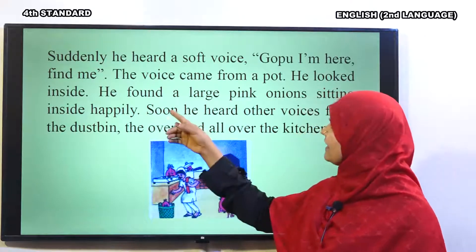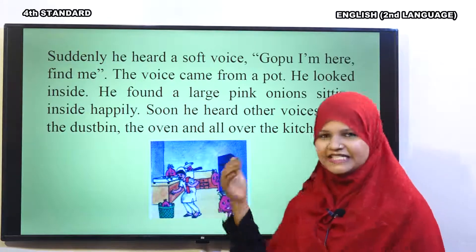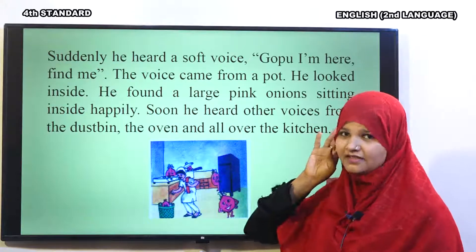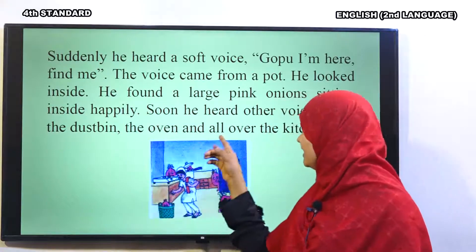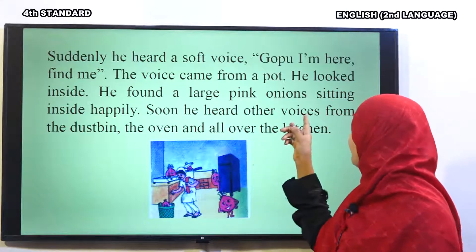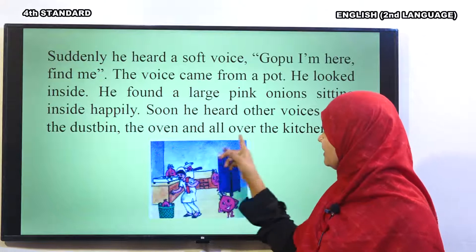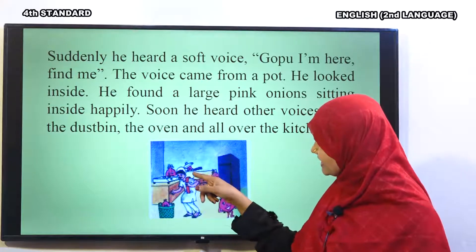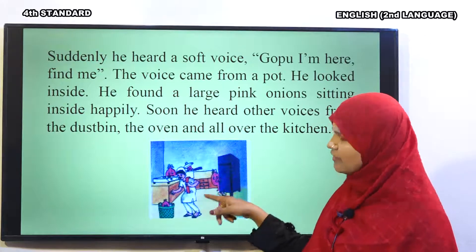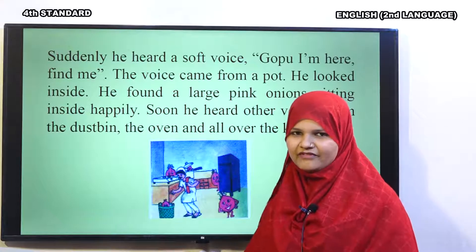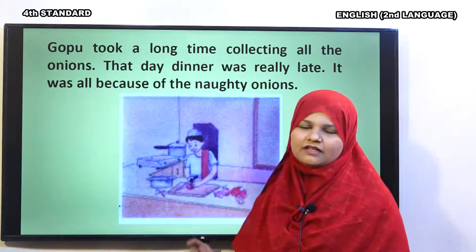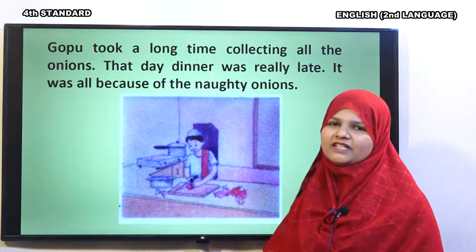He looked inside. Jaise hi Gopu ne pot mein dekha to kya usko kya mila wahaan par? He found a large pink onion sitting inside happily. Ek bahut badi pyaaz pot ke andar muskuraate hue baithi thi. Soon, he heard other voices from the dustbin, the oven and all over the kitchen. Alag alag taraf se, dustbin ke peeche se, oven se aur kitchen ke saare taraf se awaazein aayi. In this picture you can see one is hidden in the pressure cooker, another one is behind the stove, here in the dustbin, behind the fridge — all onions were spread everywhere in the kitchen.